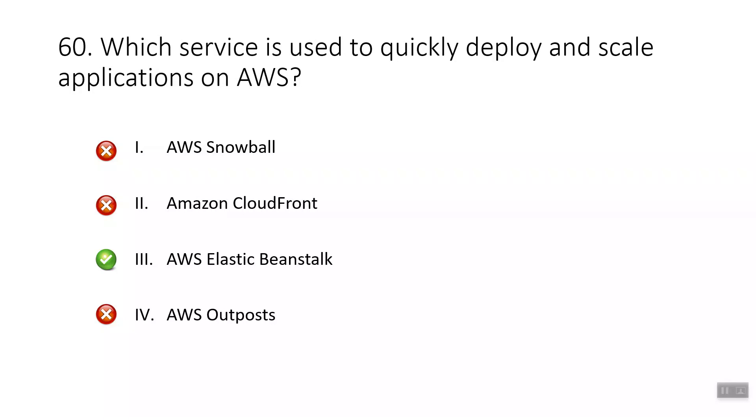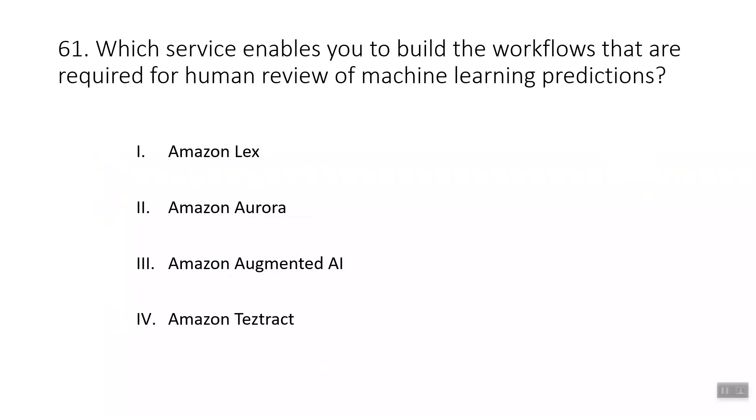Question sixty-one: which service enables you to build workflows required for human review of machine learning predictions? The correct answer is Amazon Augmented AI, which makes it easy to build the workflows required for human review of machine learning predictions. Amazon Lex builds conversational interfaces. Amazon Aurora is an enterprise-class relational database. Amazon Textract is a machine learning service that automatically extracts text and data from scanned documents.